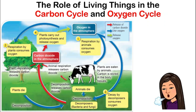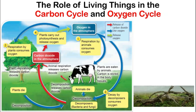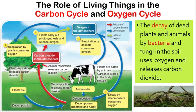How about the carbon cycle and oxygen cycle? As we discussed, plants and animals both carry out respiration — meaning we breathe in oxygen from the environment and give carbon dioxide back to the environment. When living things die, there is a process of decaying by bacteria and fungi in the soil, and this process also takes away oxygen and gives back carbon dioxide to the environment.